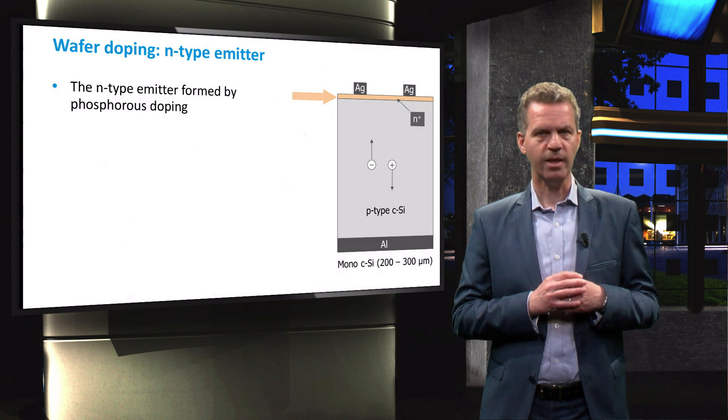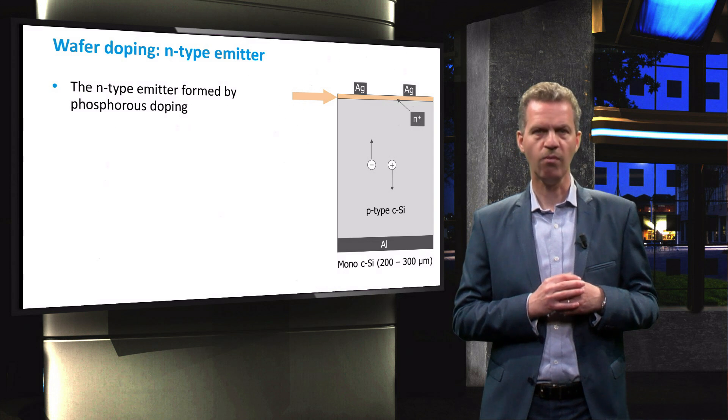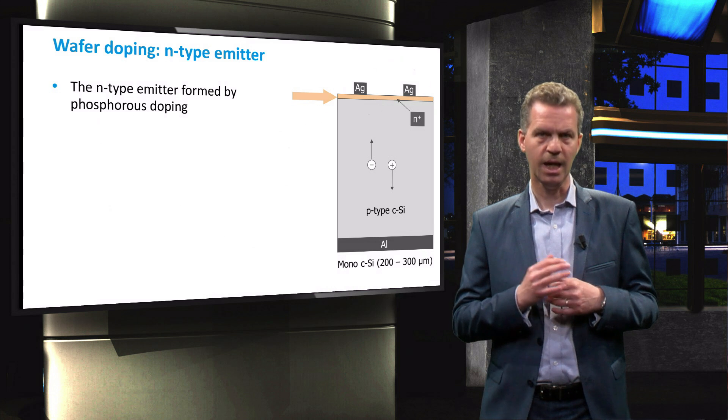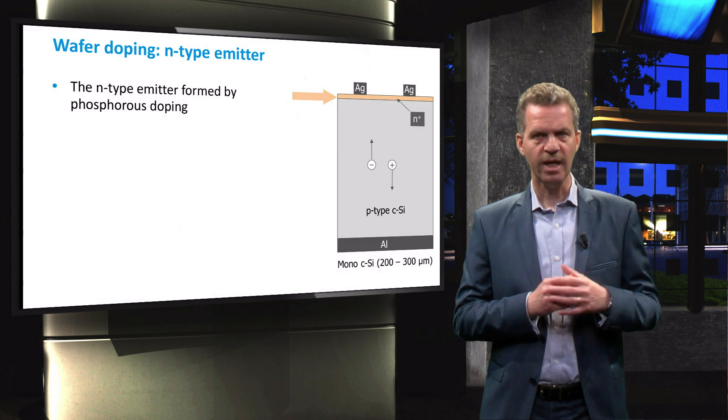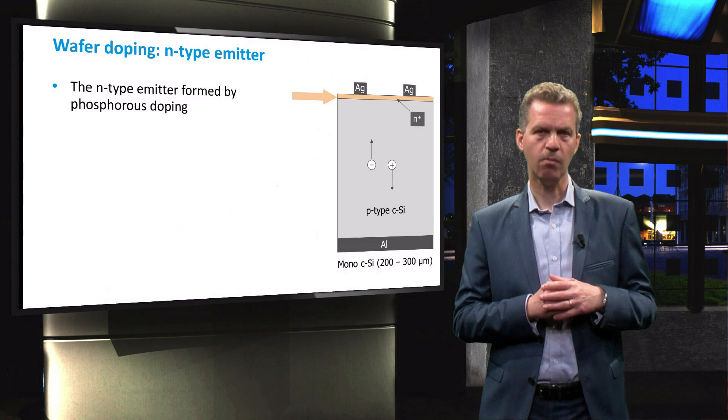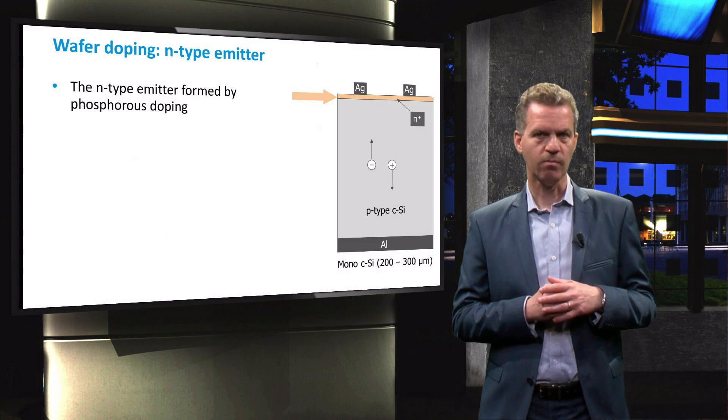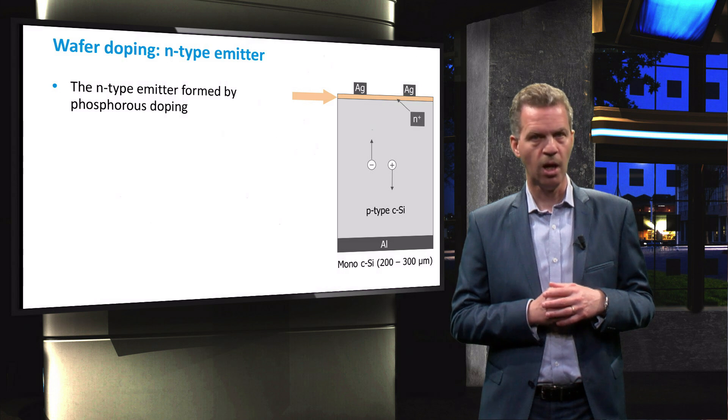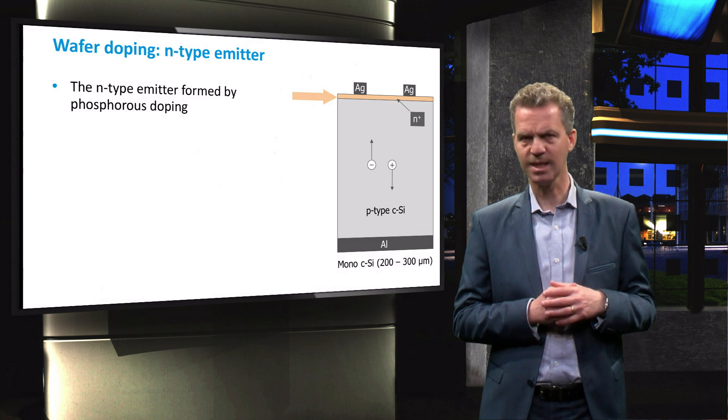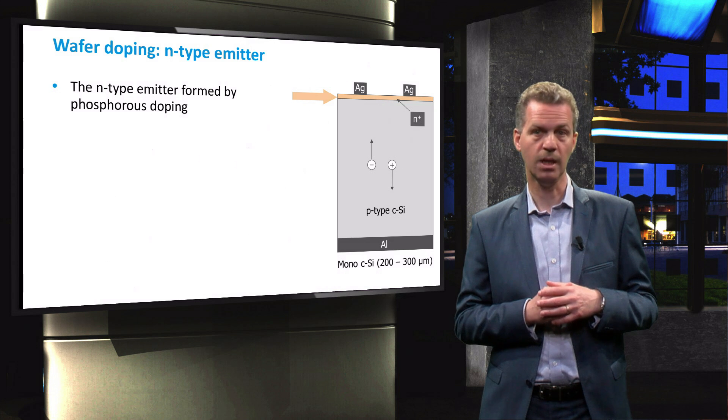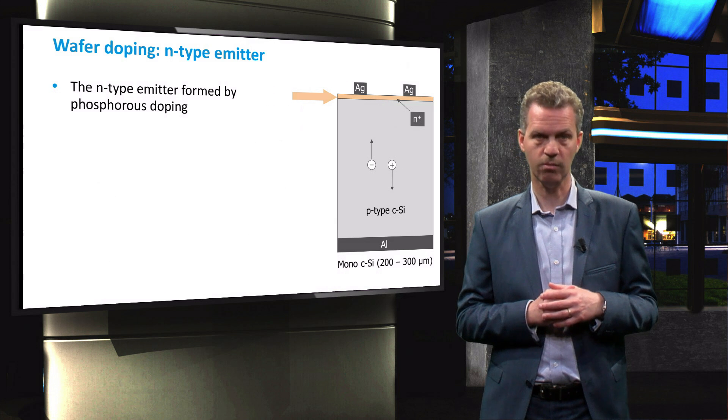We will now turn our attention to the production process of the n-type emitter layer, here in orange. This layer is formed by doping the P-type wafers with phosphorus atoms. As the acceptor atoms are still present in this region, the doping concentration of the donor atoms should exceed that of the acceptor atoms in order to create an n-type material.